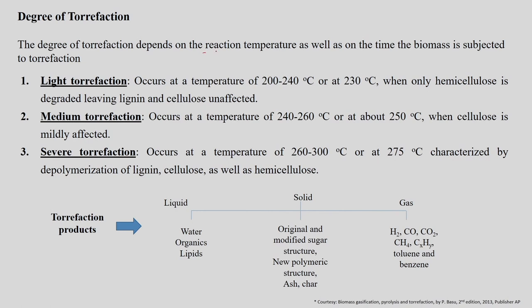The degree of torrefaction depends on the reaction temperature as well as on the time the biomass is subjected to the torrefaction process, and it is shown here in three different ways. For example, light torrefaction occurs in the temperature range of 200 to 240°C — more precisely around 230°C — when only the hemicellulose fraction of the biomass is affected, while the lignin and cellulose components remain unaffected.